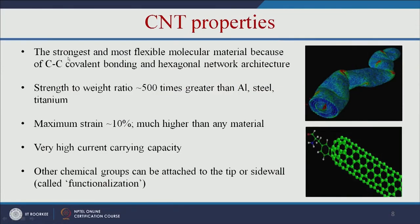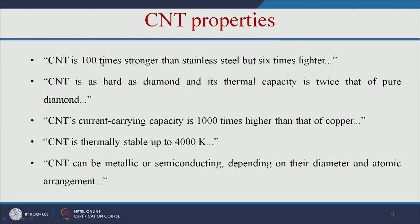Let us see some properties of carbon nanotubes. This is the strongest and most flexible material because of CC covalent bonding. It is 500 times stronger than aluminium and steel, and the maximum strain it can withstand is more than 10%, higher than any material. It has very high current-carrying capacity, and we can add any kind of functional group through functionalization. It is 100 times stronger than stainless steel but 6 times lighter, and it is harder than diamond. It has high thermal stability, and depending on the arrangement of atoms, it can be metallic or semiconducting.